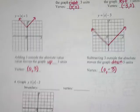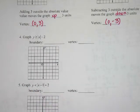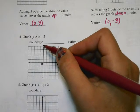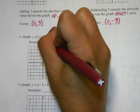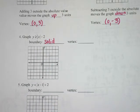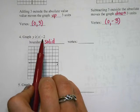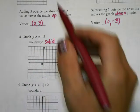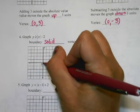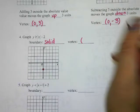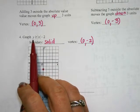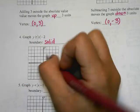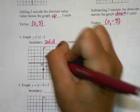Let's look at number 4: graph y is greater than or equal to the absolute value of x minus 2. First, is this going to be solid or dashed? Solid, right. Now where is the vertex? I don't have anything inside the absolute value, but I have a minus 2 outside, so that moves it down. I start at the origin and go down 2 — my vertex is now at 0, negative 2. Is there a number out front of my absolute value? No, so my slope is 1: up 1 over 1 in both directions.